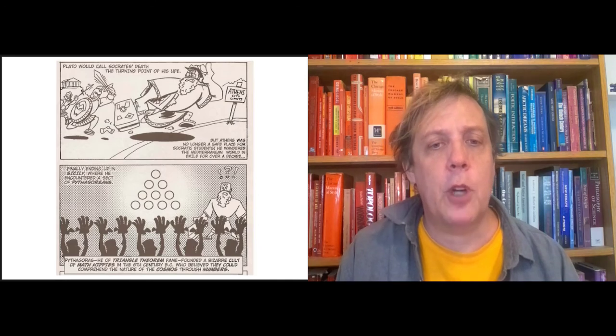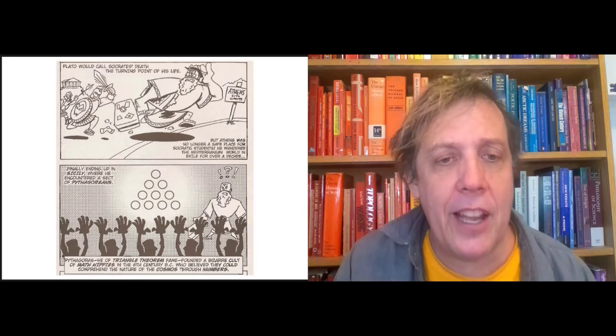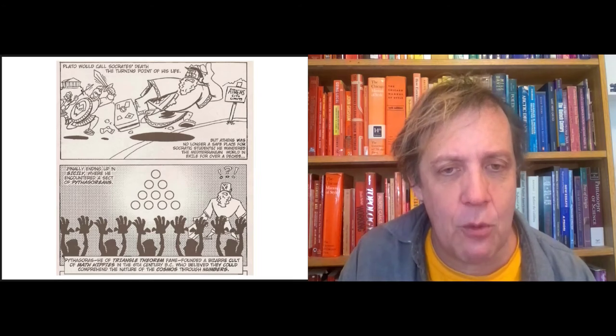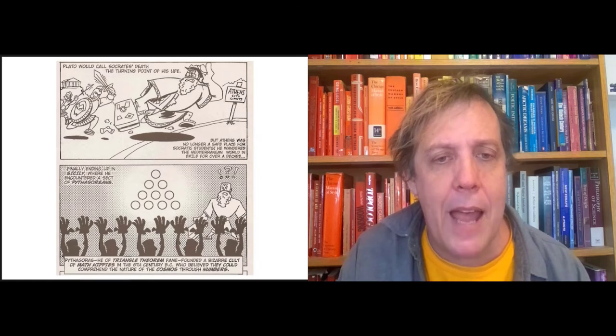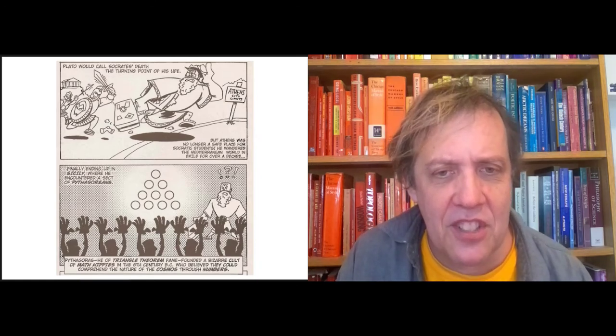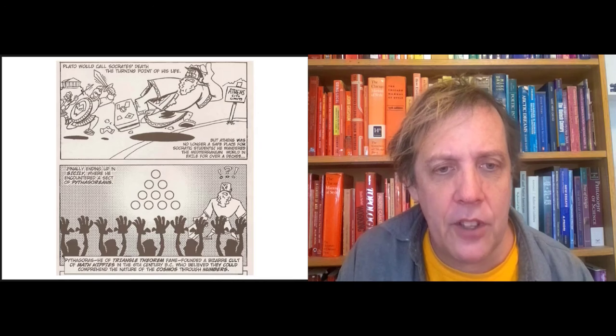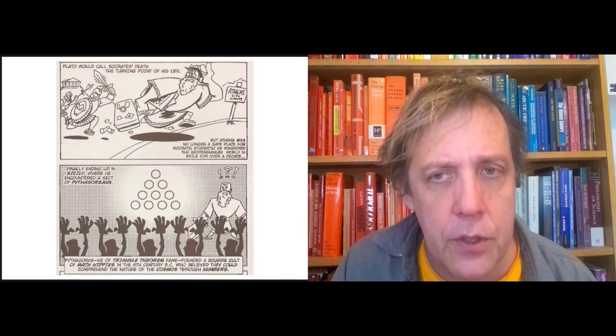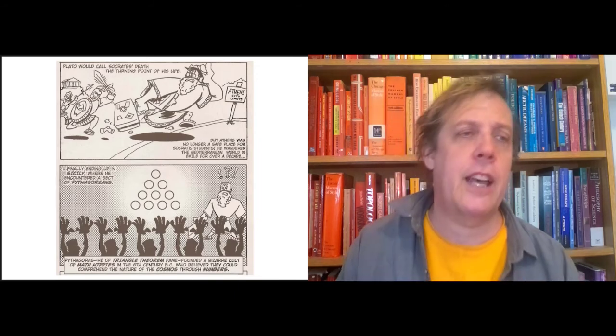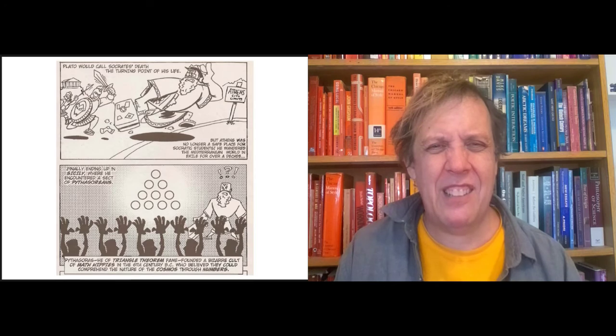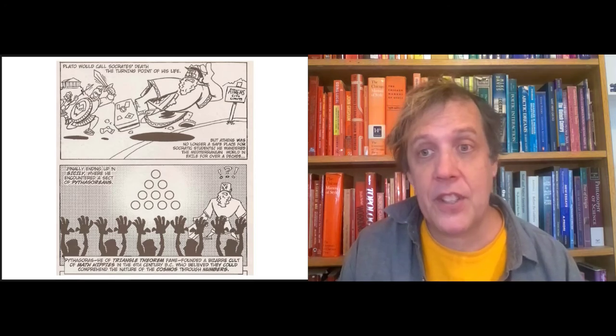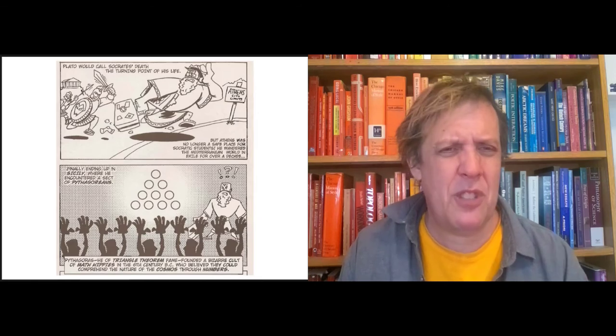So I'll just read from the comic here. Remember, Pythagoras, he of the triangle theorem fame, A squared plus B squared equals C squared, founded a bizarre cult of math hippies in the sixth century who believed that they could comprehend the nature of the cosmos through numbers. And again, you might say to yourself, comprehend the universe through numbers. This makes sense for physicists to this day.